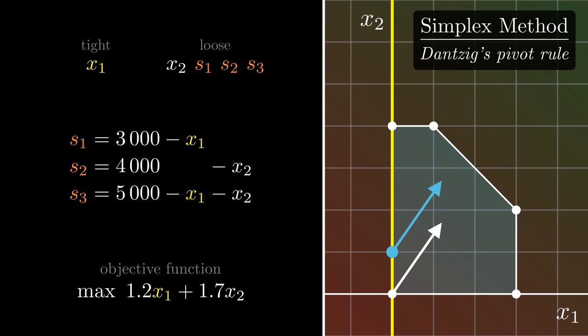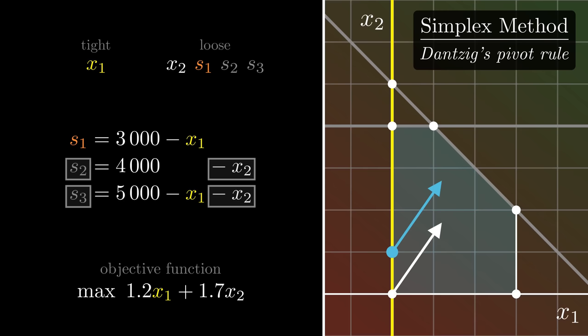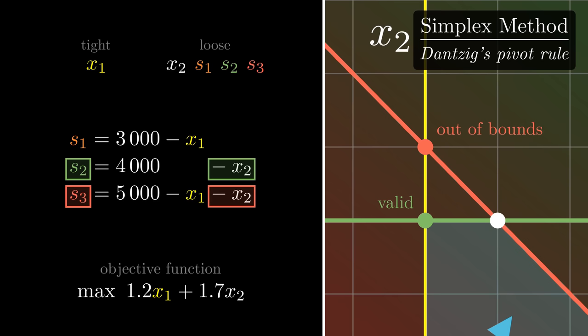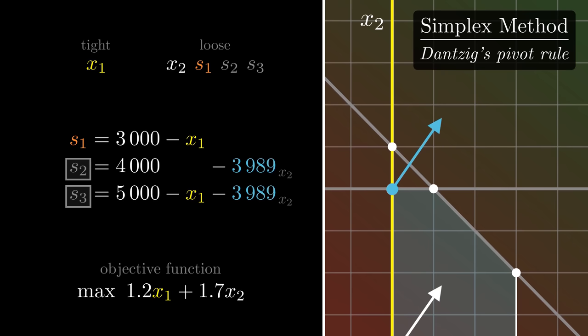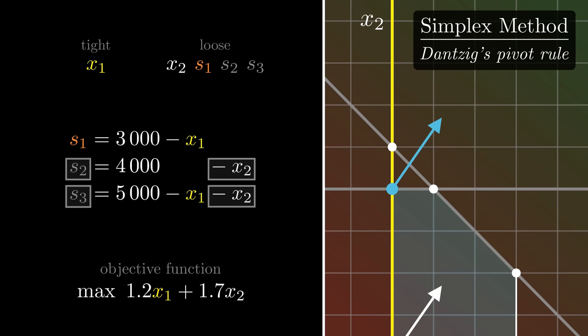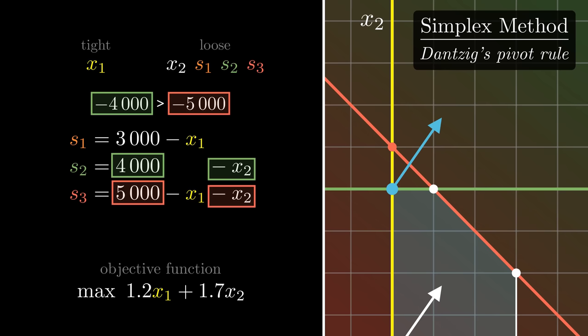Now that we've selected the direction to move in, we have to determine how far, which we'll do by tightening. To see what choices we have, we'll look at the equalities where x2 appears, which are s2 and s3, since these are the loose variables constraining it. We want to make either s2 or s3 tight, but, as we see, only one of them keeps us in the area of valid solutions. So how can we calculate which one it is? Well, let's simulate what happens when we move in the selected direction. We see that x2 is increasing, and its value eventually reaches 4000, which evens out the constant value for the second equality, making s2 tight. Now if we were to go further, s2 would have to go negative for the equality to still work, which is not allowed since all variables have to be non-negative. So, in other words, to calculate which variable to tighten, we're interested in the ratio between x2 and the constants. The larger it is, the sooner we reach it. And as we've seen, it is indeed s2, which we tighten.